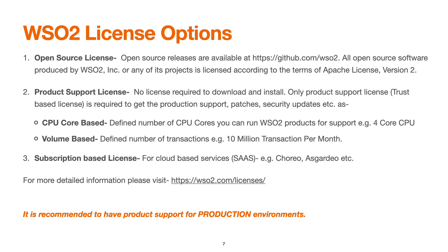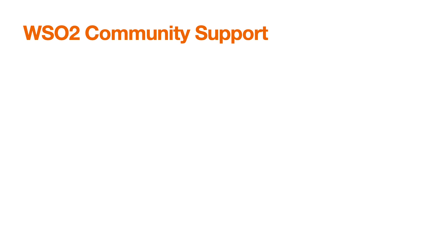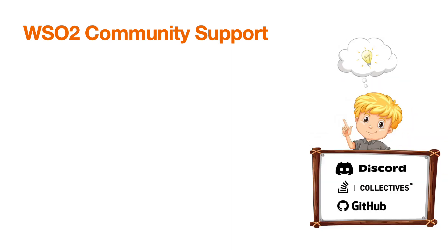For more detailed information on licensing options, you can visit wso2.com/licenses. It is always recommended to use product support for production environments. If you are in an evaluation phase, you can request a trial account or plan for a subscription. WSO2 also provides robust community support — you don't need to worry if you don't have a valid license, as the active community group will respond to your queries, typically within the same day.